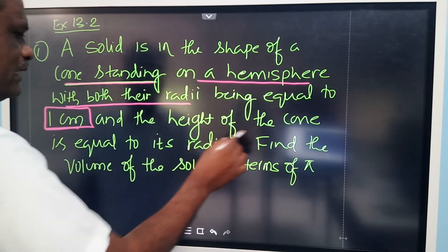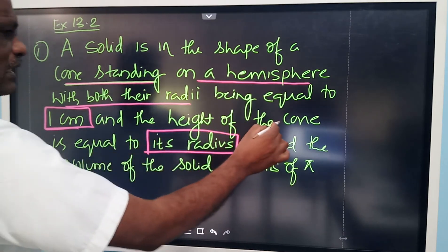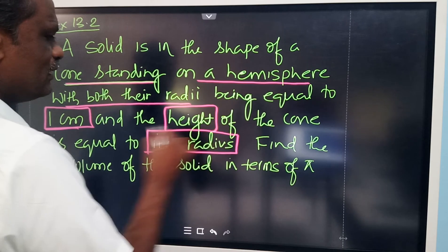Radius is equal to 1 centimeter, and the height of the cone is equal to its radius. So height and radius are equal.